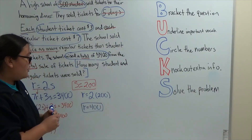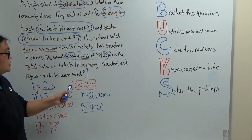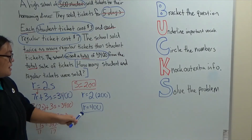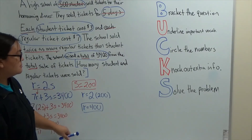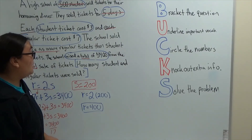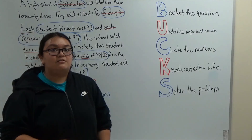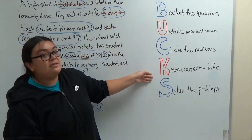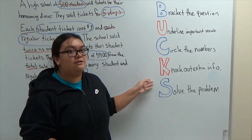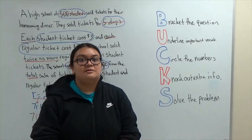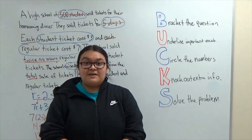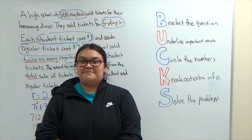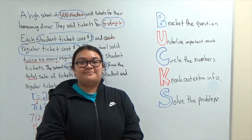So now I know I sold two hundred student tickets and four hundred regular tickets. And all of this I found by simply using the BUG method to figure out what I needed to find and how to find it. I hope you found this video very helpful — use other resources from the start. Thank you.